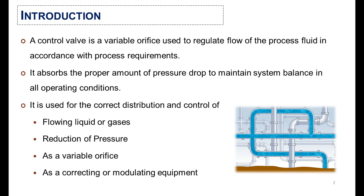A control valve is a variable orifice used to regulate flow of the process fluid in accordance with process requirements. It absorbs the proper amount of pressure drop to maintain system balance in all operating conditions, and it is used for the correct distribution and control of flowing liquid or gases, reduction of pressure as a variable orifice, and as a correcting or modulating equipment.